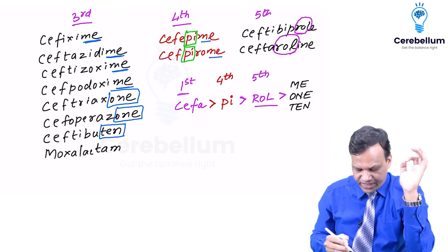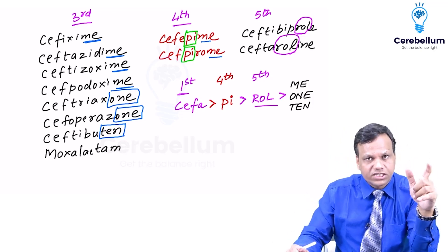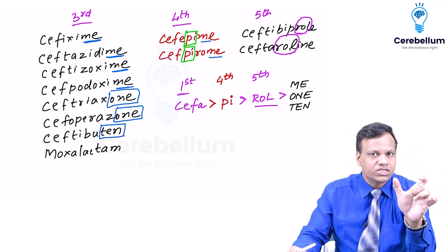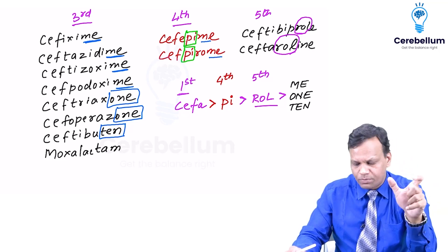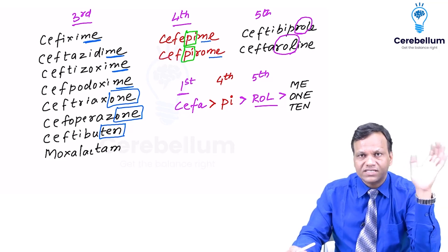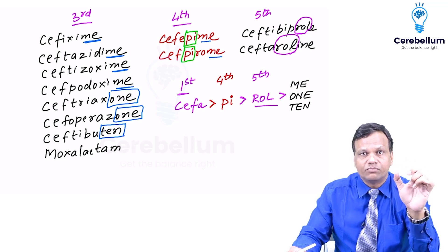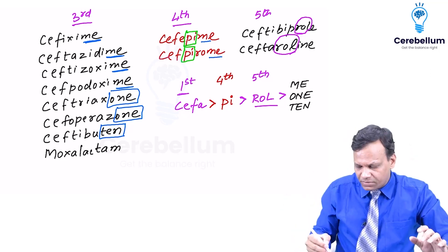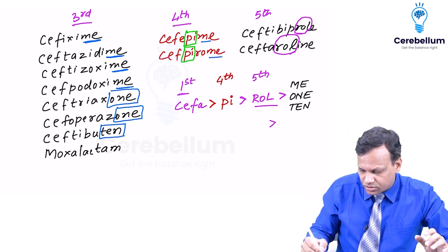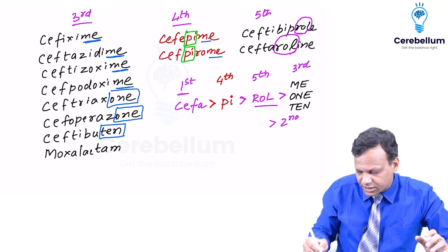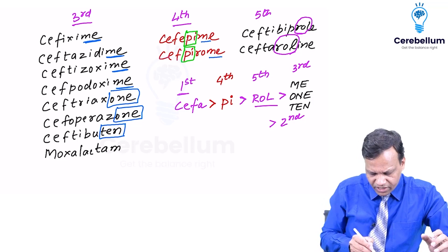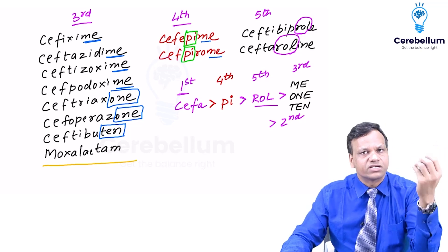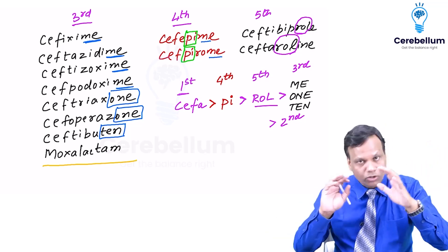So follow the sequence: if 'cefa' — first generation (exception: cefaclor); if 'pi' present — fourth generation; if 'role' present — fifth generation; if ending with 'ime', 'one', or 'ene' — third generation (exception: cefuroxime); all remaining drugs are second generation. One more note: moxalactam does not start with 'cefa' and is a totally different third generation drug.